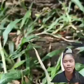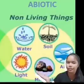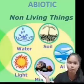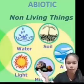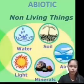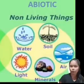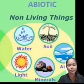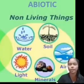Abiotic factors are the non-living parts of an ecosystem. These are examples of abiotic factors: water, soil, air, light, and minerals.